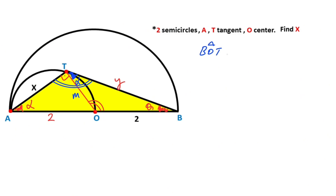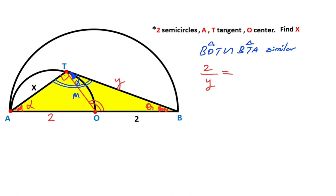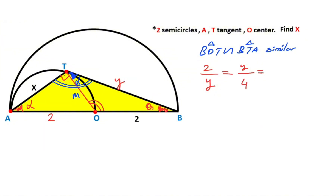So triangles BOT and BTA are similar. Therefore, starting our calculation: 2 (opposite alpha) over Y (opposite alpha) equals Y (opposite the double-line angle) over 4 (opposite the double-line angle), which must equal M (opposite theta) over x (opposite theta).